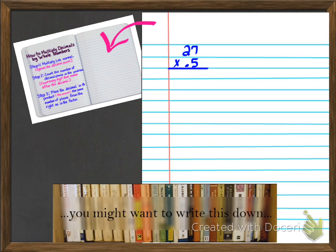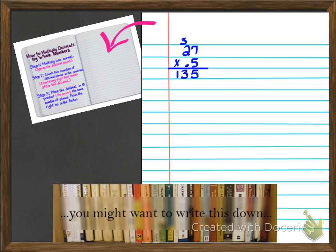In this first example, we have 27 times 0.5. Go ahead and write that down and multiply this number as you normally would — pretend the decimal point is not there. When we multiply like normal, we get 135. Now step two says to count all the decimal places in the factors. The two factors are 27 and 0.5. Focusing on 0.5, you can see the decimal point, and there is only one digit that comes after it, so there is one decimal place.